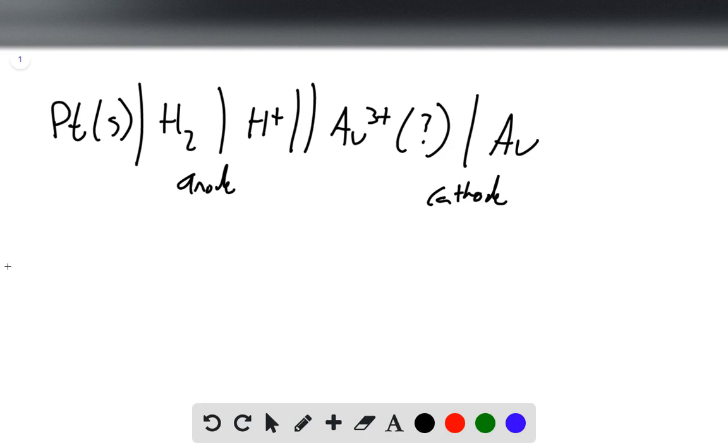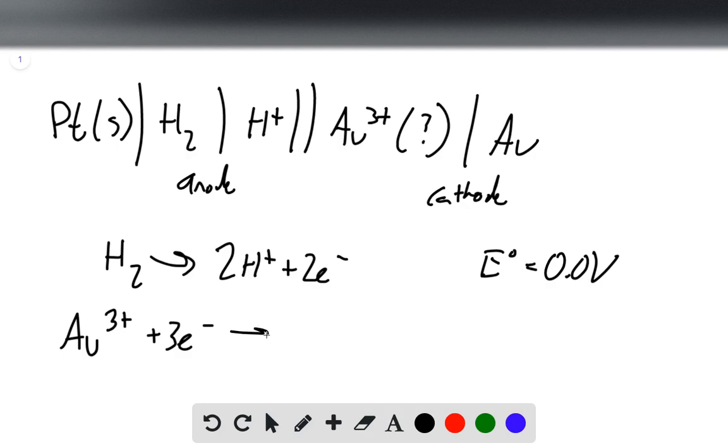And so we can write our two half reactions. One is H2 forming 2H⁺ plus 2e⁻, and that has an E° of 0.0 volts. Au³⁺ plus 3e⁻ forms Au. That is our other half reaction.